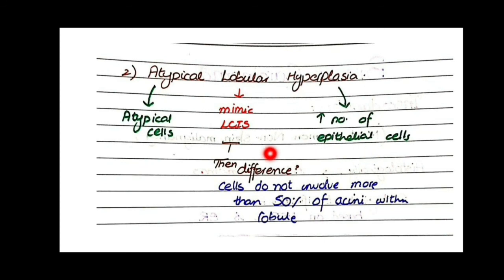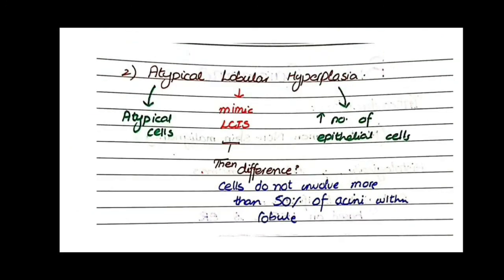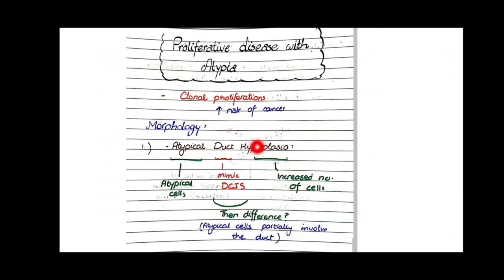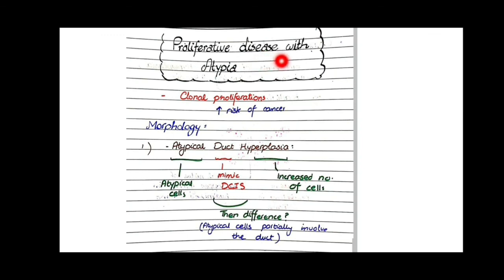In atypical lobular hyperplasia, there is an increased number of epithelial cells that may be atypical in morphology. Lobular means this lesion resembles lobular carcinoma in situ (LCIS). The difference between ALH and LCIS is in magnitude: in atypical lobular hyperplasia the atypical cells do not involve more than 50% of the acini within the lobule, whereas in lobular carcinoma in situ they involve more than 50% of the acini. Both ADH and ALH are examples of proliferative disease with atypia.